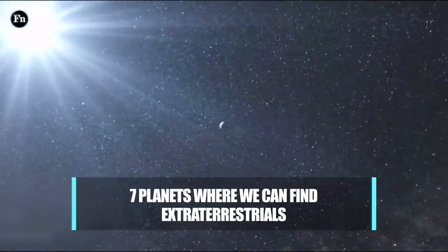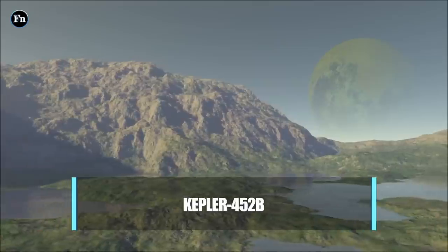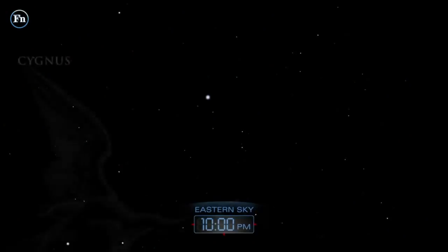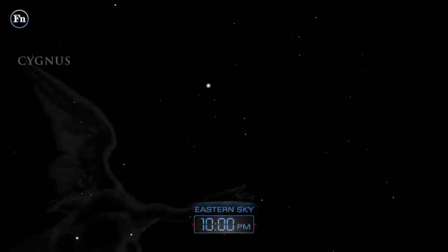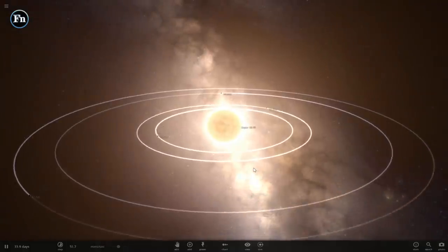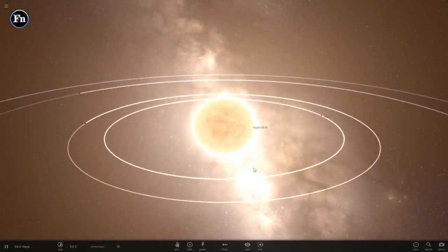Number 7: Kepler-452b. The name Kepler-452 holds a star in the constellation called Cygnus or the Swan. It's a star similar to our own sun but it's too faint for us to see from Earth without a telescope.